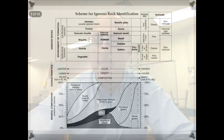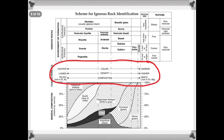This chart is found on page six of your reference table, and it talks about the igneous rock schemes. It's in three parts, and the first part I want to talk about is right here in the middle. It has to do with the colors, the density, and the composition of these rocks.